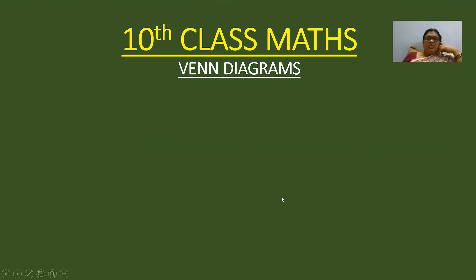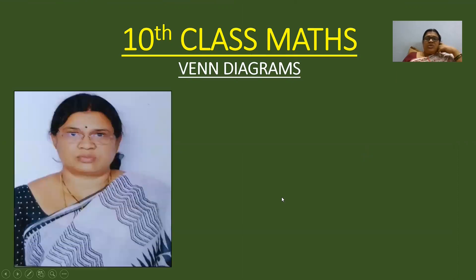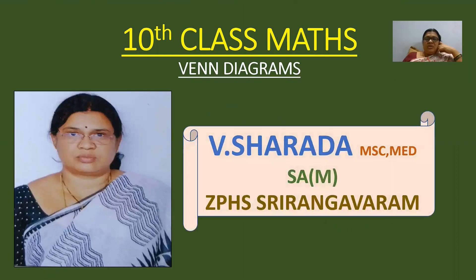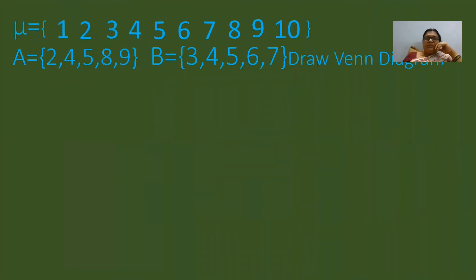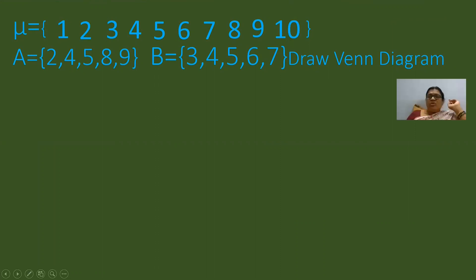Welcome to video lesson students. Today's topic is Venn diagrams. This is a very important topic and you may score four marks on Venn diagrams. Before this class we discussed what a universal set is and what subsets, equal sets, and equivalent sets are — all covered in the previous session. Now in this session we will discuss Venn diagrams.